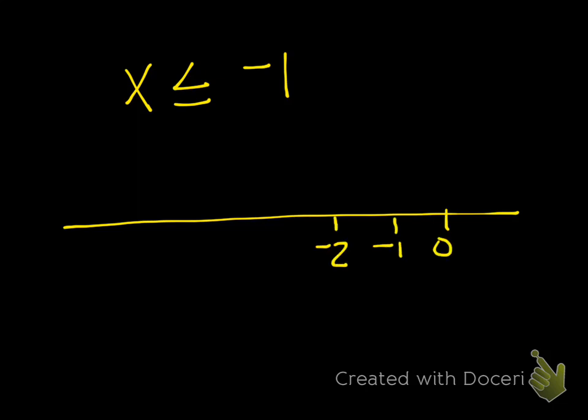Okay, so let's just do another example. x is less than or equal to negative 1. All right, so we have a number line, 0, negative 1. All right, so looking at that inequality, this is x is less than or equal to negative 1. So does it include negative 1?